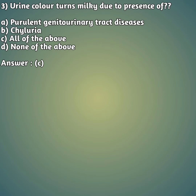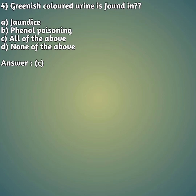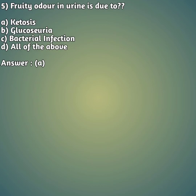Fourth question: greenish colored urine is found in — option A: jaundice, option B: phenol poisoning, option C: all of the above, option D: none of the above. Your right answer is all of the above, option C, because jaundice and phenol poisoning may both cause greenish color in urine.